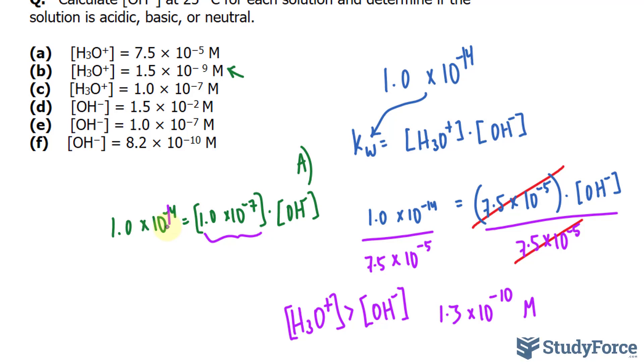So I know that the concentration of OH- will be half of what we have here. And you can always verify using your calculator. Go ahead and type this in, and you'll see that it will come out as 1.0 times 10 to the power of negative 7. So this solution will be neutral. Question C happens to be neutral.